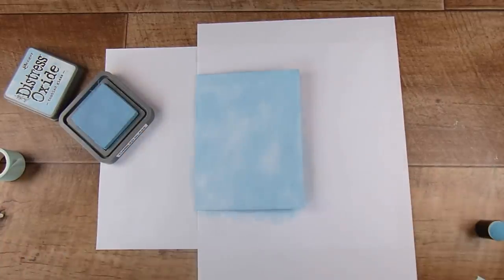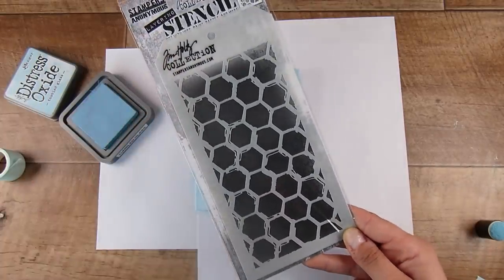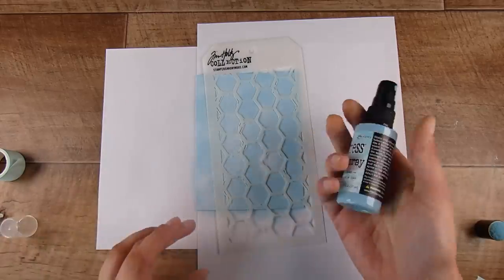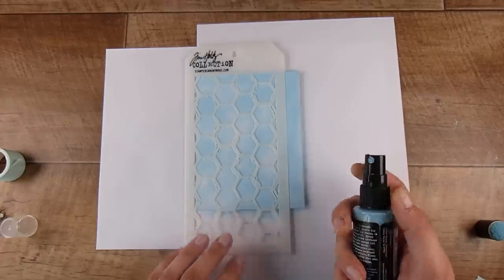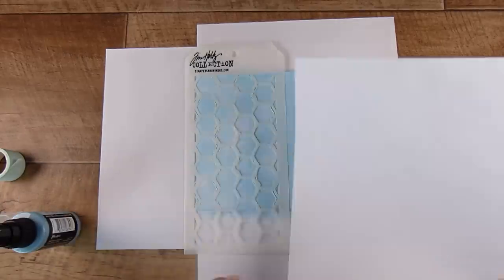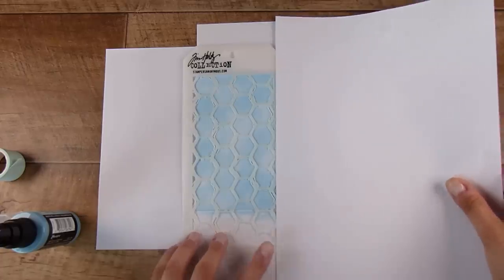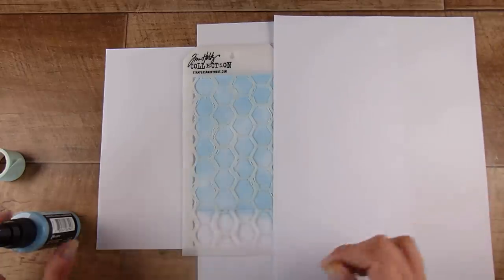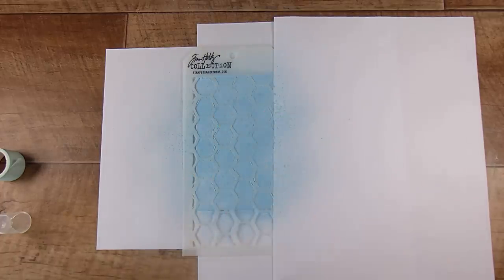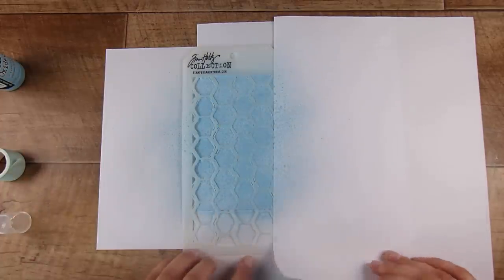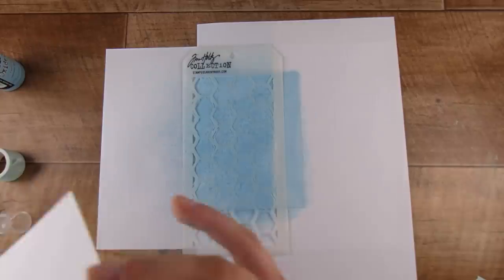I'm going to come in with the new stencil from Tim Holtz, I believe this one is called Brush Hex. I'm coming in with some Tumbled Glass Distress Oxide ink. I'm just going to cover up that little edge because I don't want a harsh edge, I want the pattern to go all over the front.